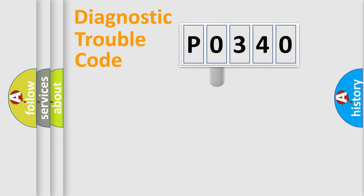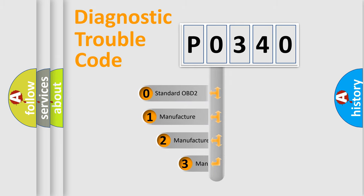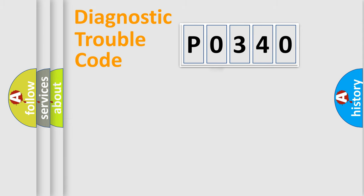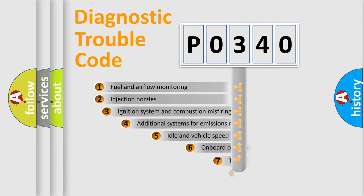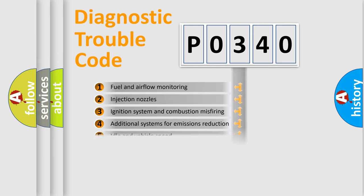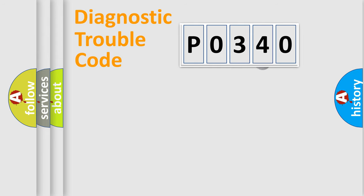This distribution is defined in the first character of the code. If the second character is expressed as zero, it is a standardized error. In the case of numbers 1, 2, or 3, it is a more specific expression of a car-specific error. The third character specifies a subset of errors. The distribution shown is valid only for the standardized DTC code.